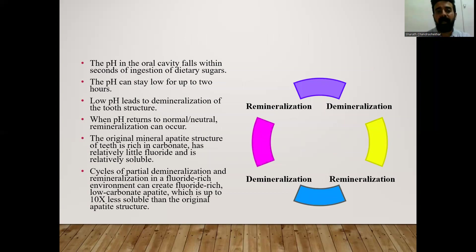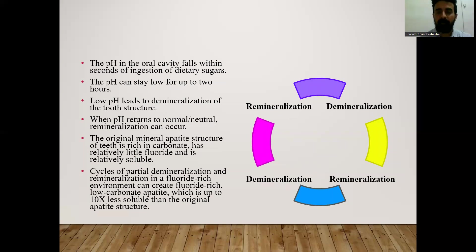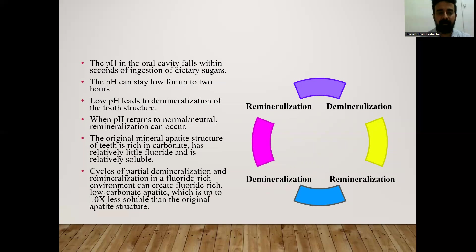The pH in the oral cavity falls within seconds of ingestion of dietary sugars. When we consume anything sweet — sucrose being the main culprit — the pH lowers and this pH can stay low for up to two hours, which is when bacterial action begins. The low pH leads to demineralization of the tooth structure, and when pH returns to neutral, remineralization can happen. So it is a cyclic process, with remineralization and demineralization happening simultaneously.